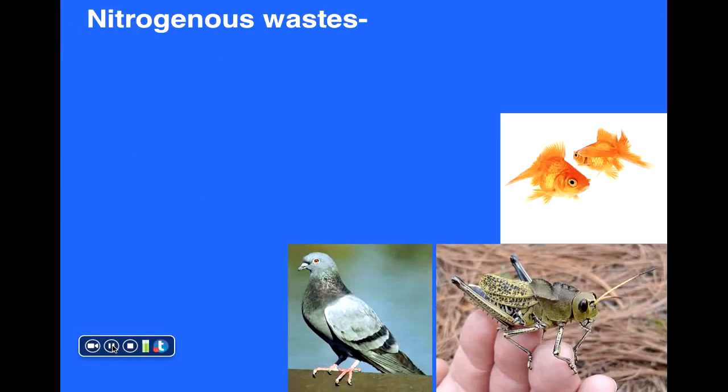In this chapter we focus on nitrogenous waste products. We consume proteins and as a result of digestion we form nitrogenous waste products. Animals produce ammonia initially as a result of digesting proteins. Many aquatic organisms can release ammonia directly since it's very soluble in water, making it an effective way to eliminate that waste product.